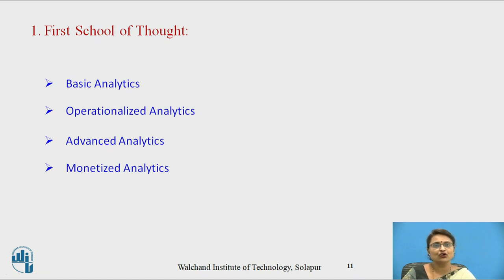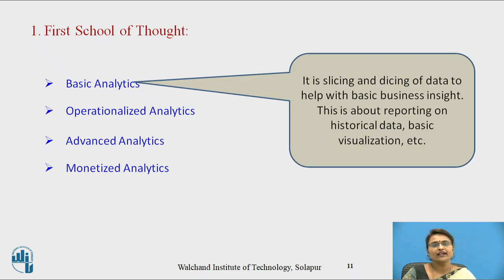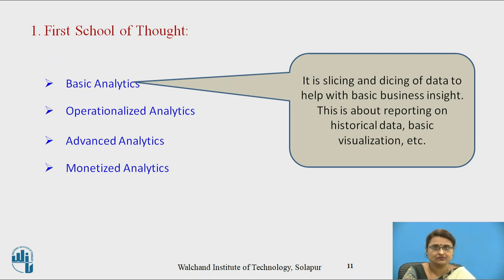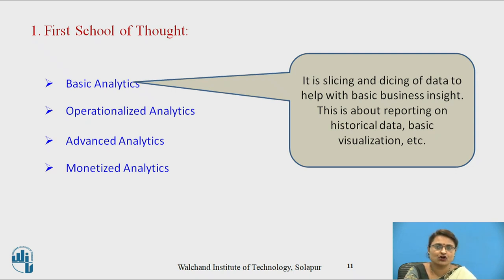The first school of thought talks about basic analytics. Basic analytics is about how data can be divided, summarized, and aggregated to use for business insights, and how that data can be used for reporting purposes. Historical data is analyzed and converted into information. Data mining algorithms are applied on the historical data and a report is generated, either as documentation or as visualized data.